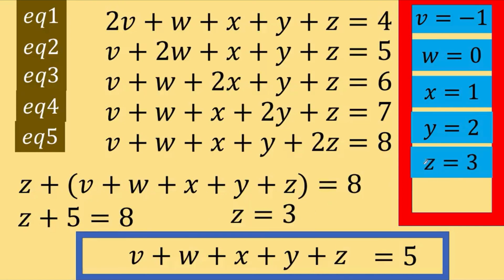So, at this point, we now have all the values of the variables. v equals negative 1, w equals 0, x equals positive 1, y equals 2, and z equals 3.